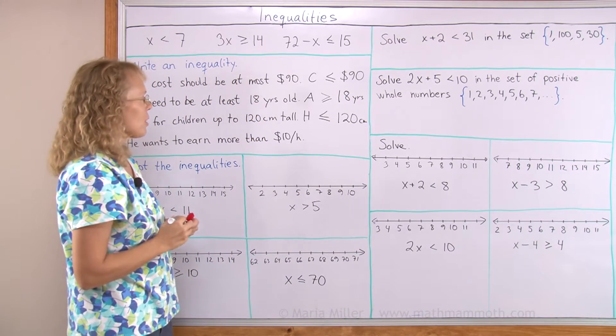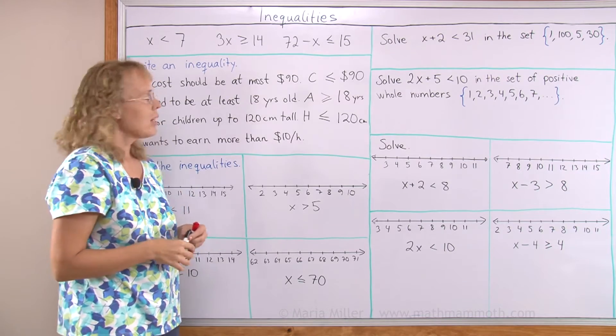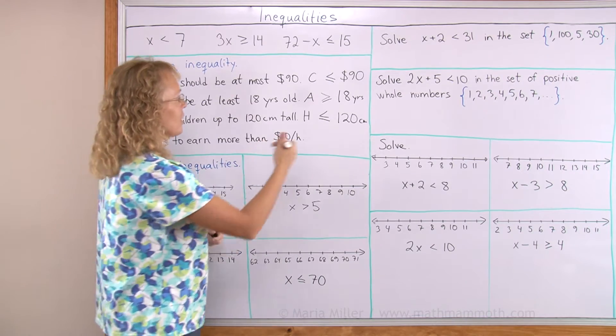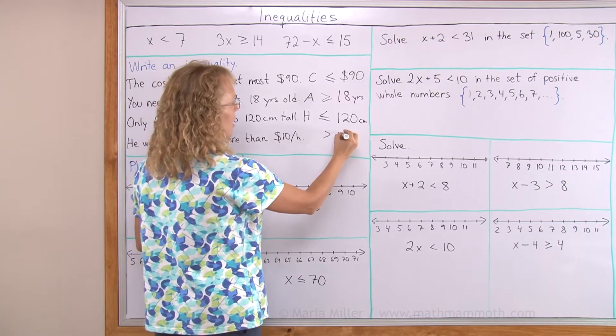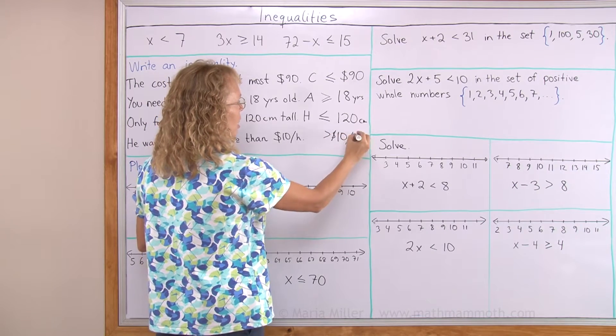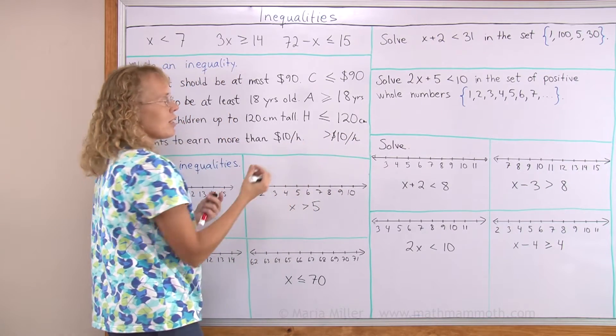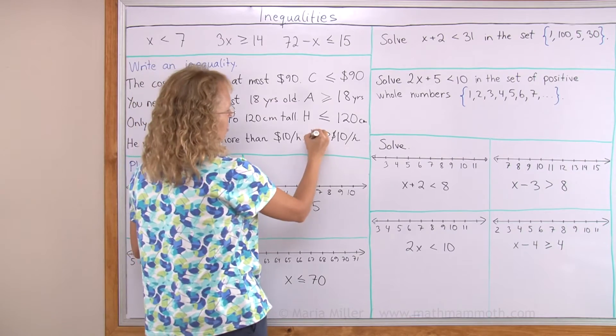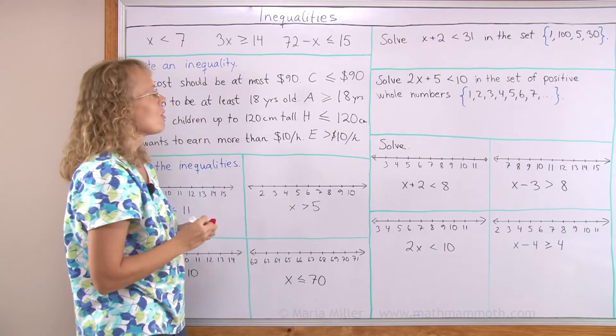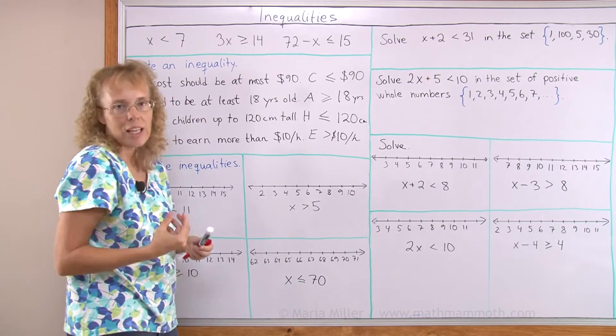He wants to earn more than ten dollars per hour. Okay, more than, it's easy. It is the more than symbol. And ten dollars per hour. And here would be his earnings. So let's use E. Earnings have to be more than ten dollars per hour.